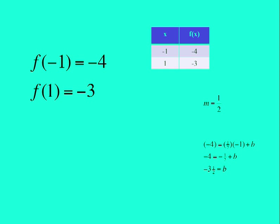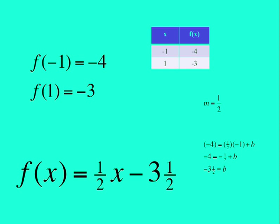And I will use the y equals mx plus b formula, and the first point, x is negative 1, y is negative 4, to find my y-intercept of negative 3 and 1/2. So I can write my equation in function format as f of x is equal to 1 and 1/2 x minus 3 and 1/2.